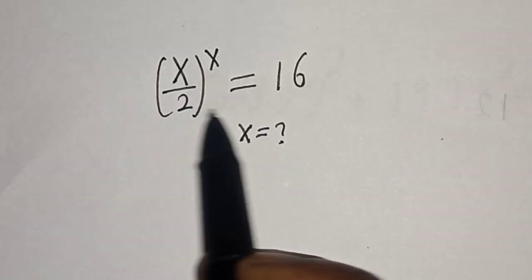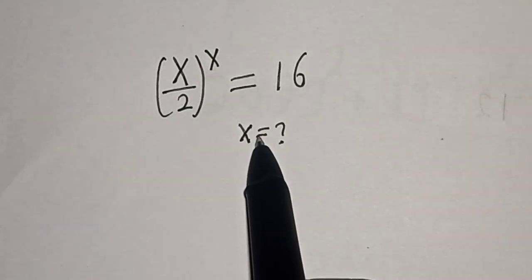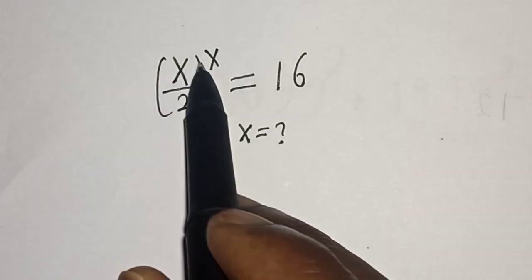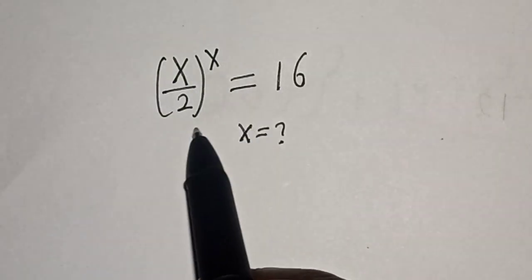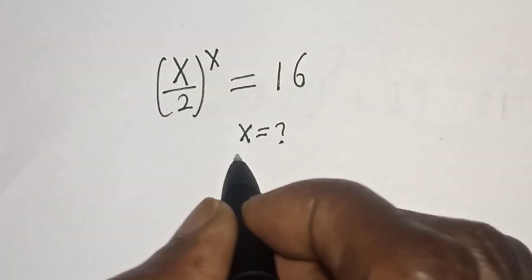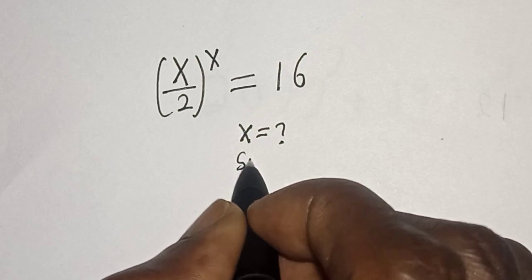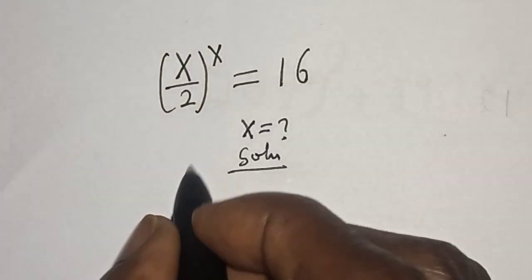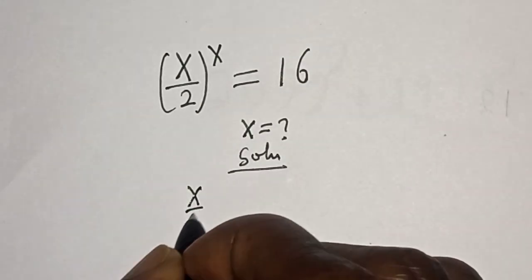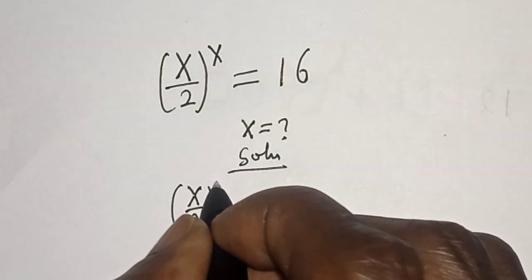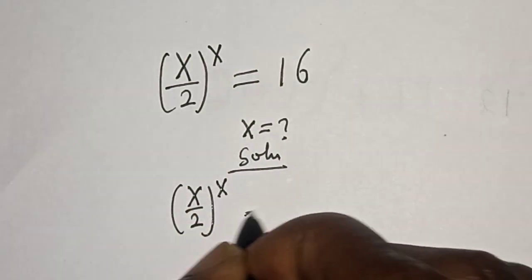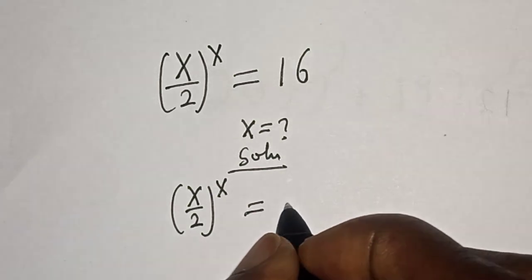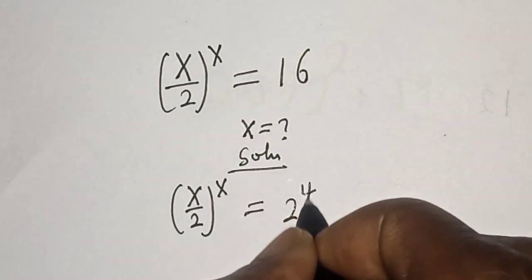Hello, welcome to Magis. In this class we want to find the value of s from this equation: s divided by 2 to the power of s is equal to 16. Like, share, comment and subscribe. The equation s divided by 2 to the power of s is equal to 16 can be written as 2 to the power of 4.